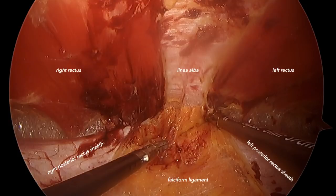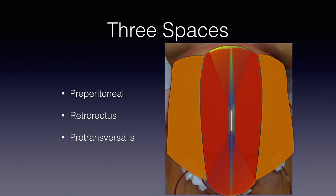If for any reason you decide you need to perform a transversus abdominis release, what you're doing is getting into a space behind or posterior to the transversus abdominis muscle — a preperitoneal space, or what we generally refer to as a retromuscular space.